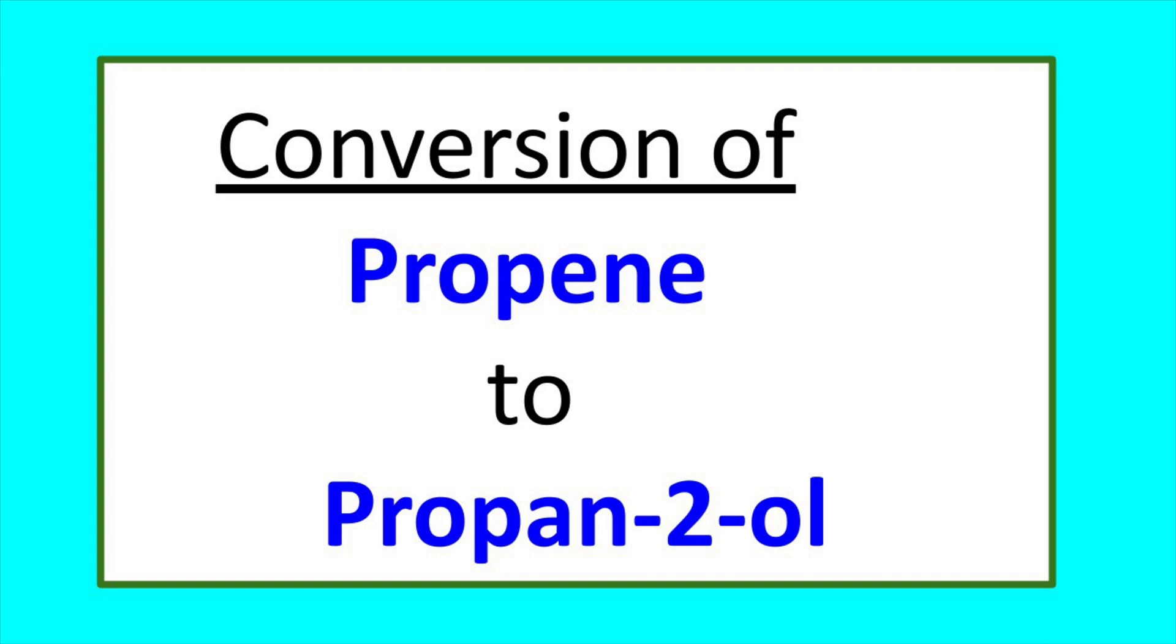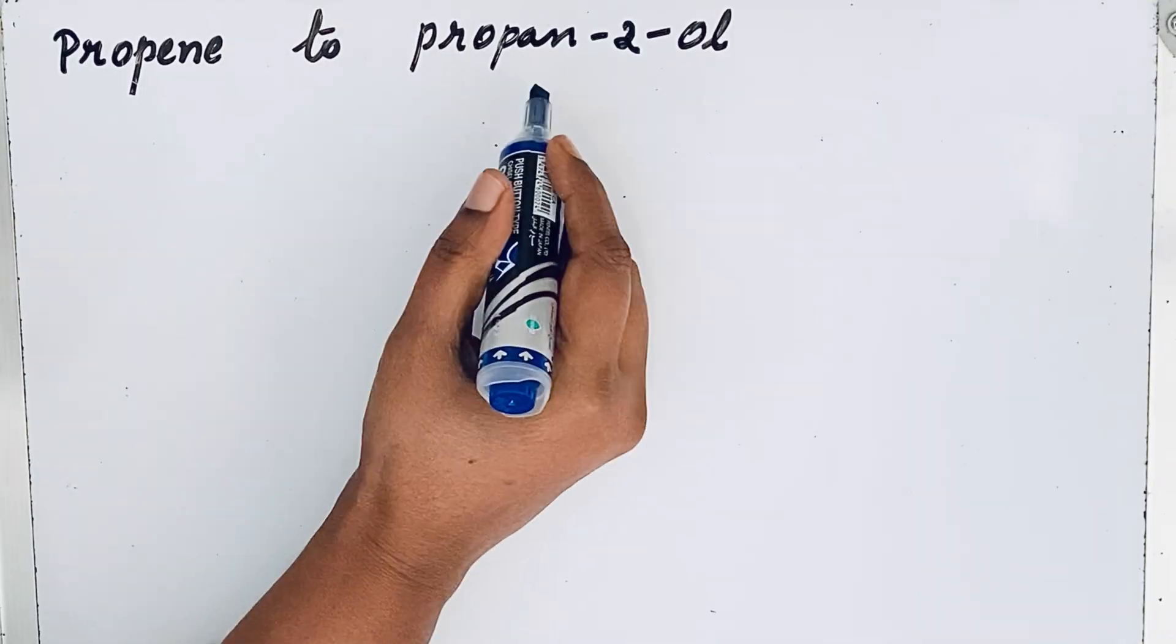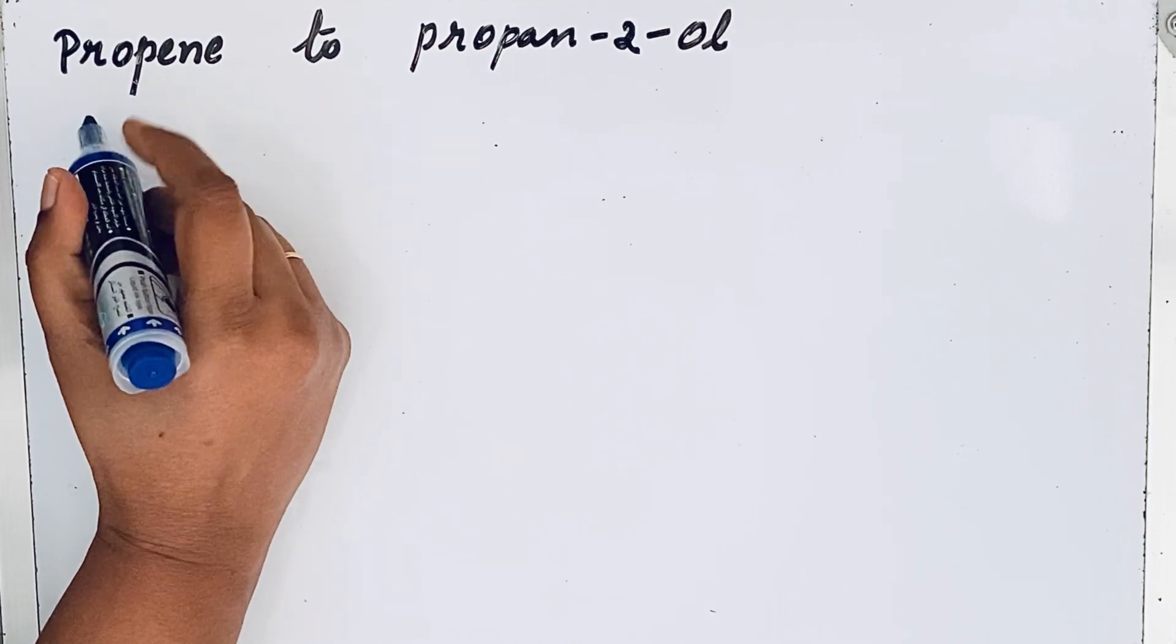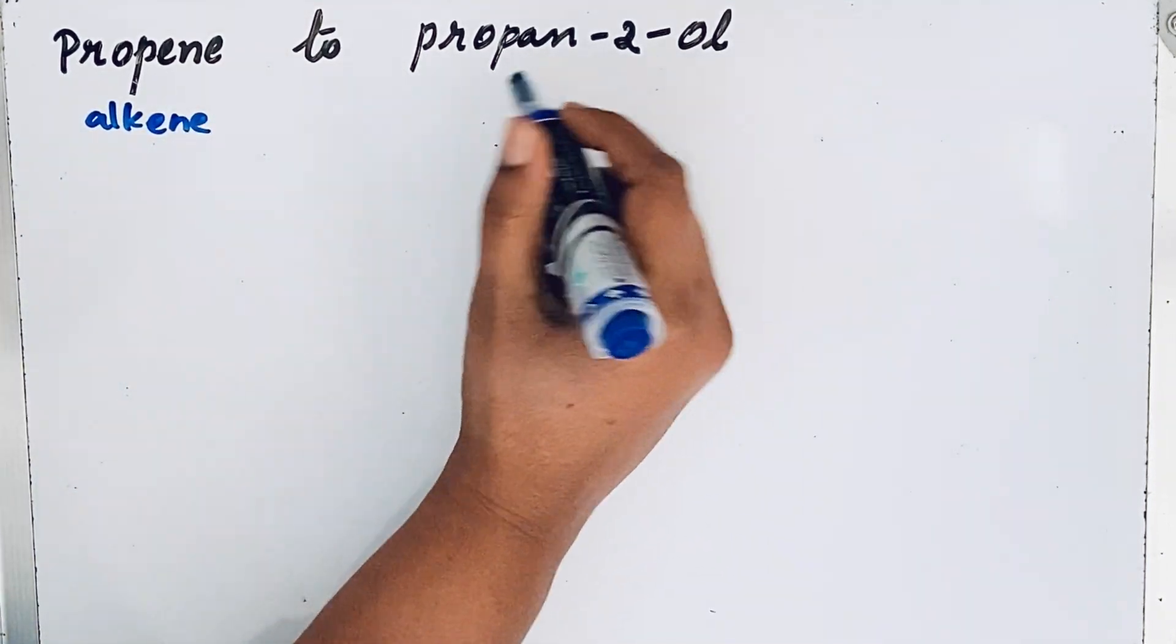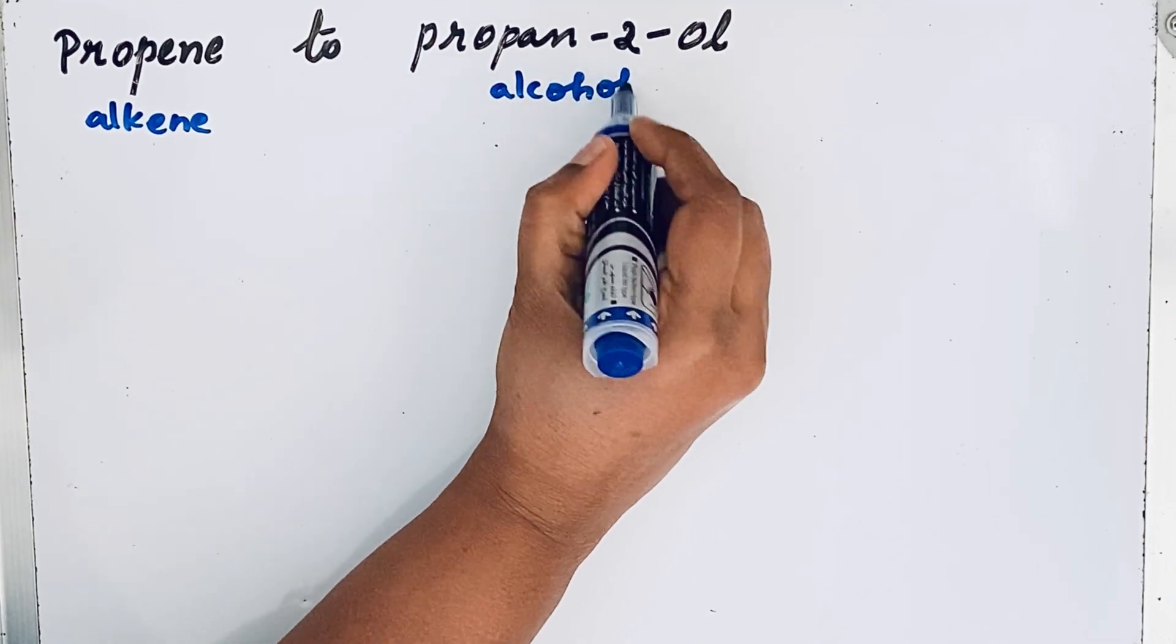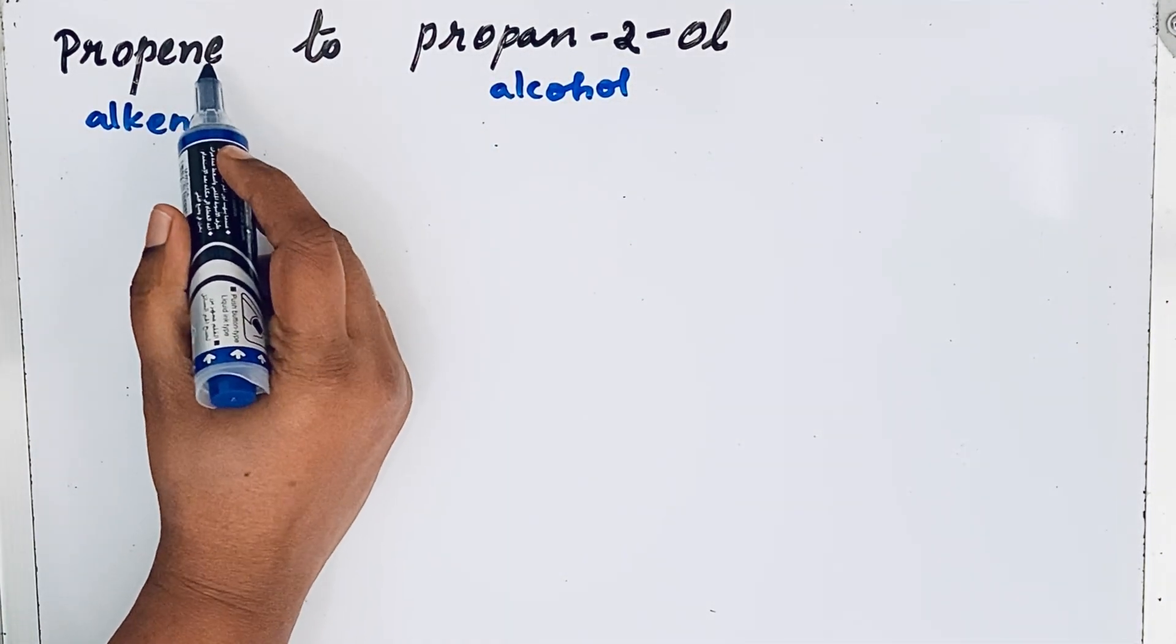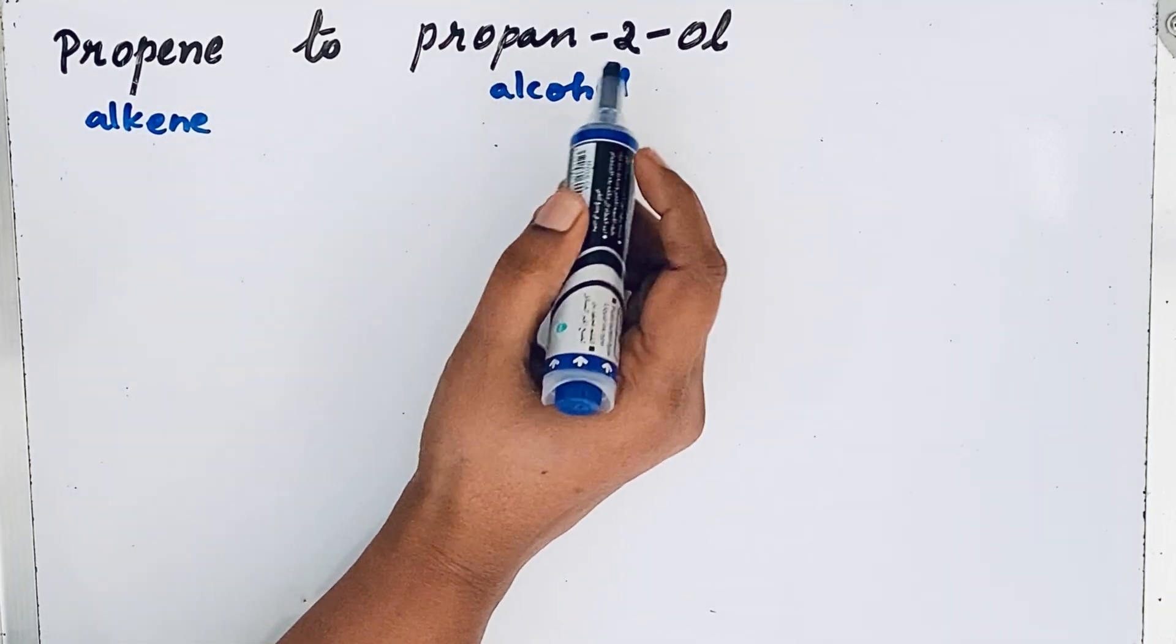Welcome to Aurora Chemistry for Everyone. Here we will see how to convert propene to propan-2-ol. Propene is an alkene, propan-2-ol is an alcohol. First, let us draw the structure of propene and propan-2-ol.